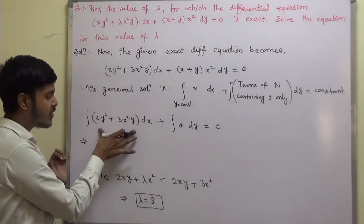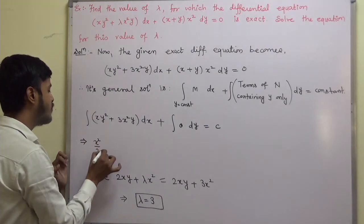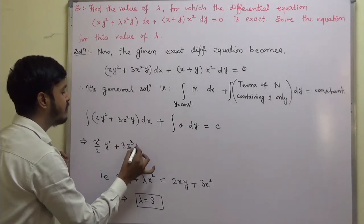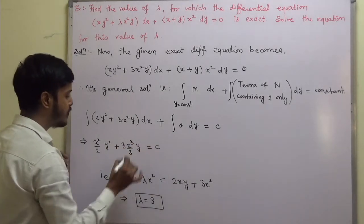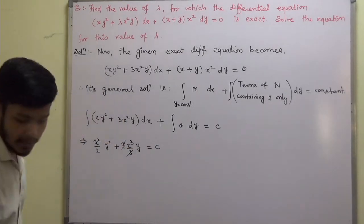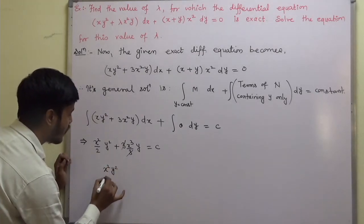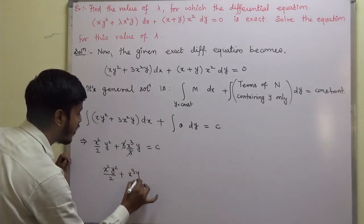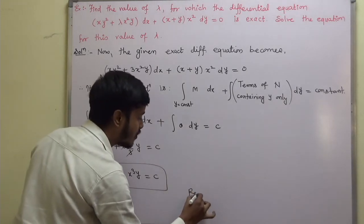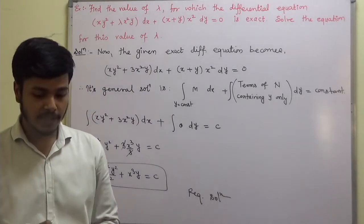Now do the integration with respect to x. This is x squared by 2 times y squared, plus 3 x cubed by 3 times y, equals c. The 3s cancel, and we remain with x squared y squared by 2 plus x cubed y equals c. This is the required solution for the given problem.